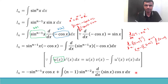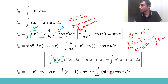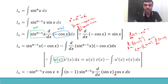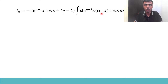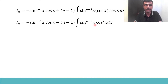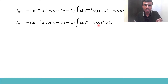The derivative of sin x is cos x. So replacing the derivative of sin x with cos x, we get sin^(n-2) x · cos x · cos x, which is sin^(n-2) x · cos² x. So we now have the integral of sin^(n-2) x · cos² x dx.